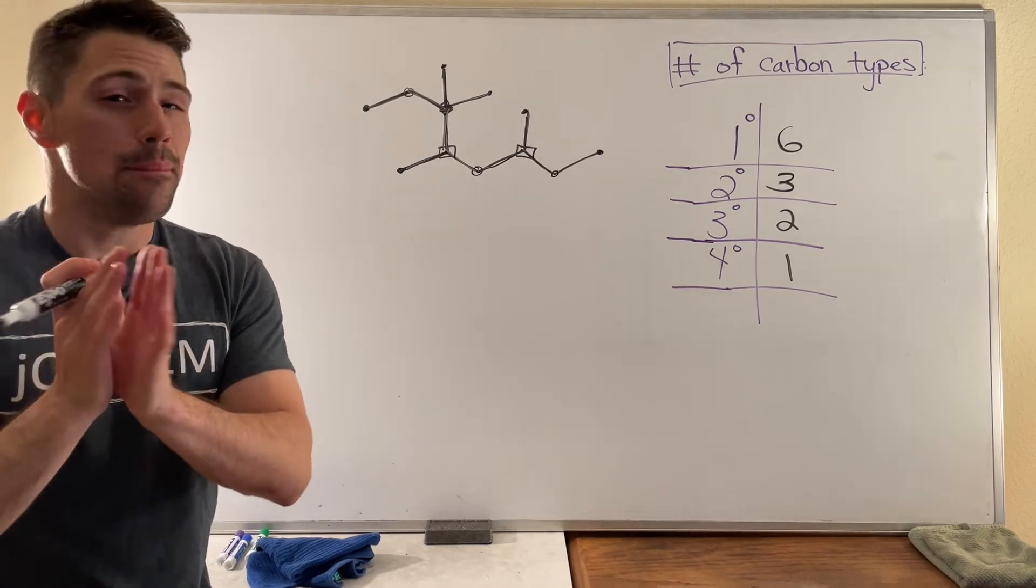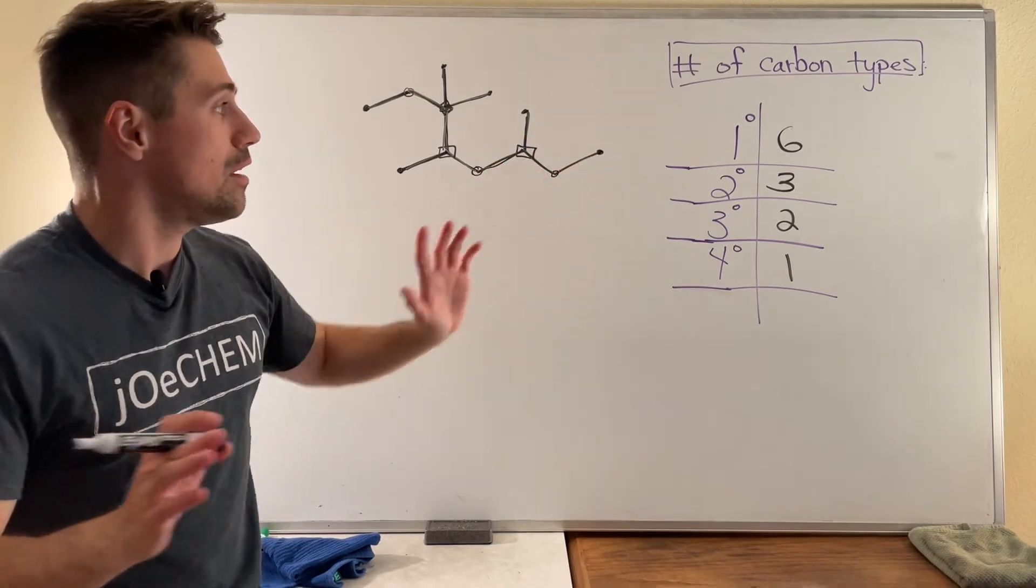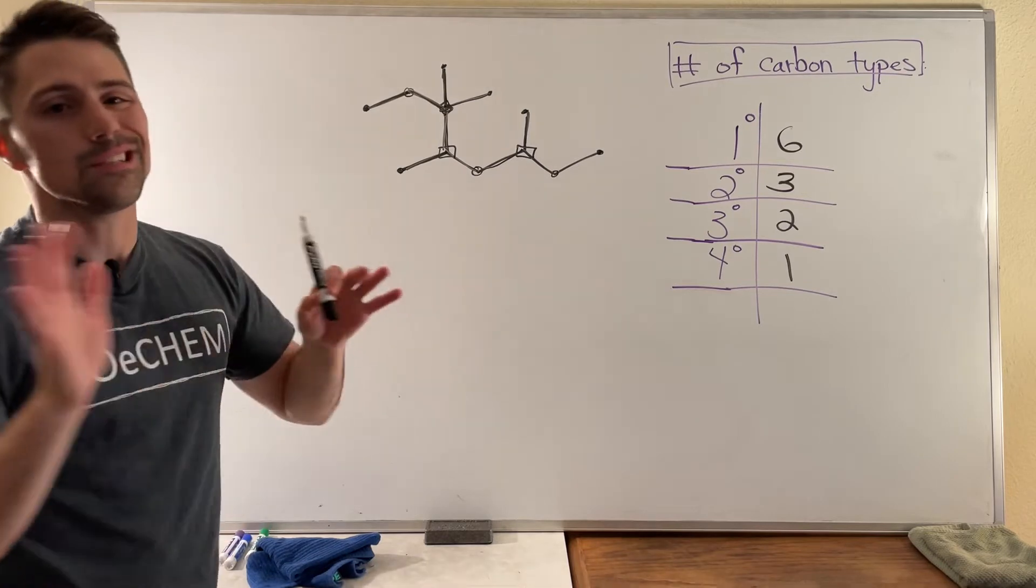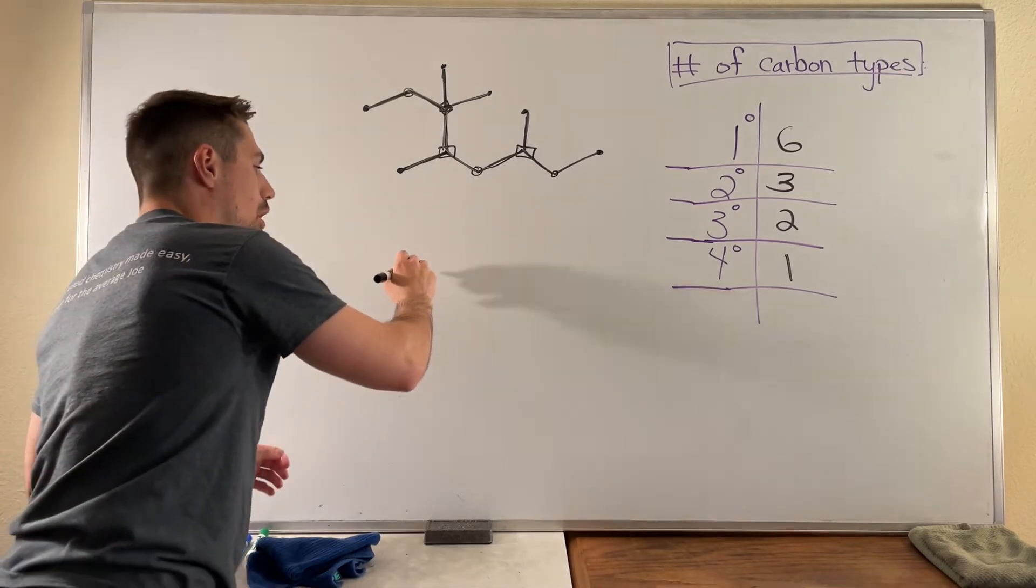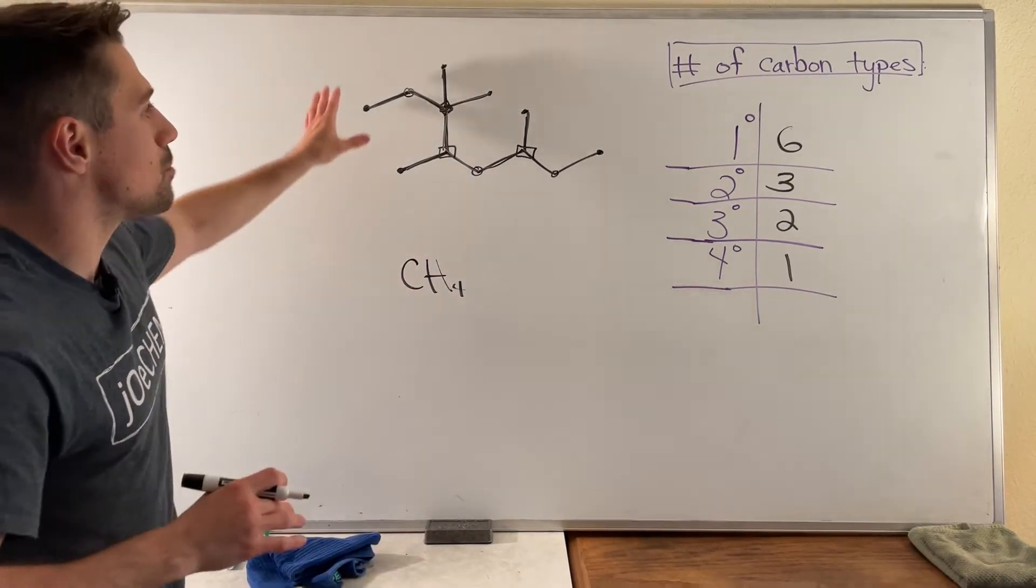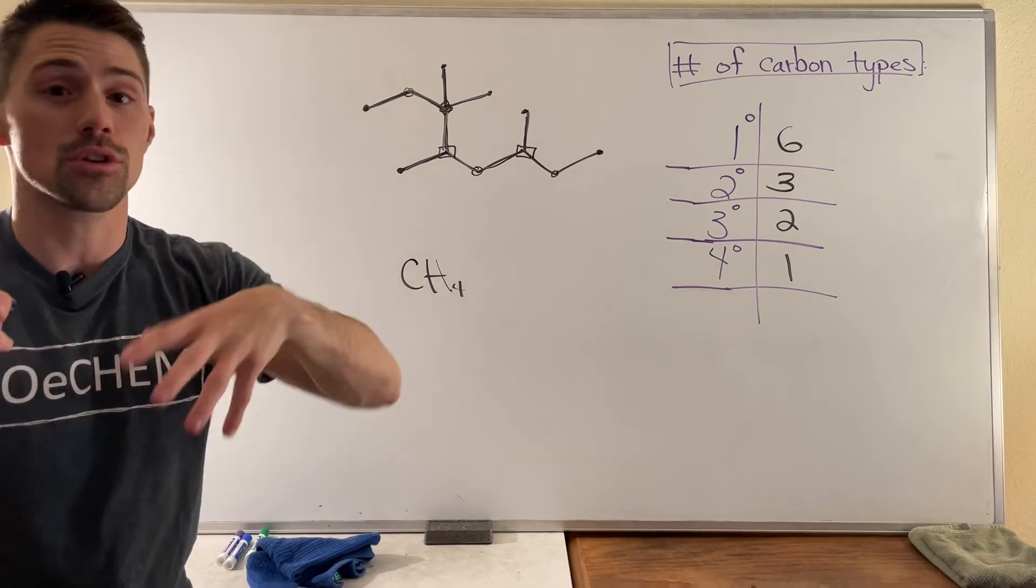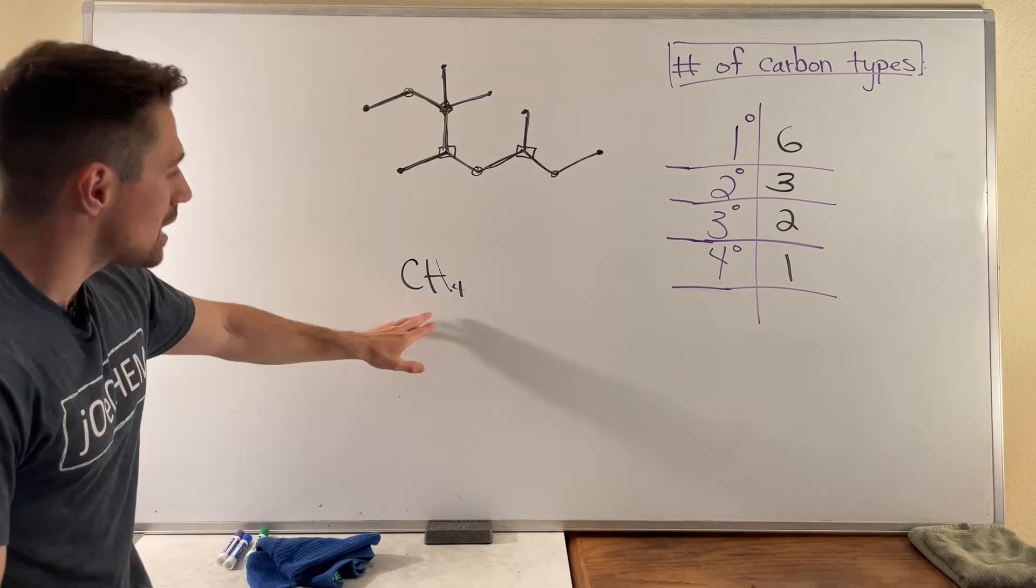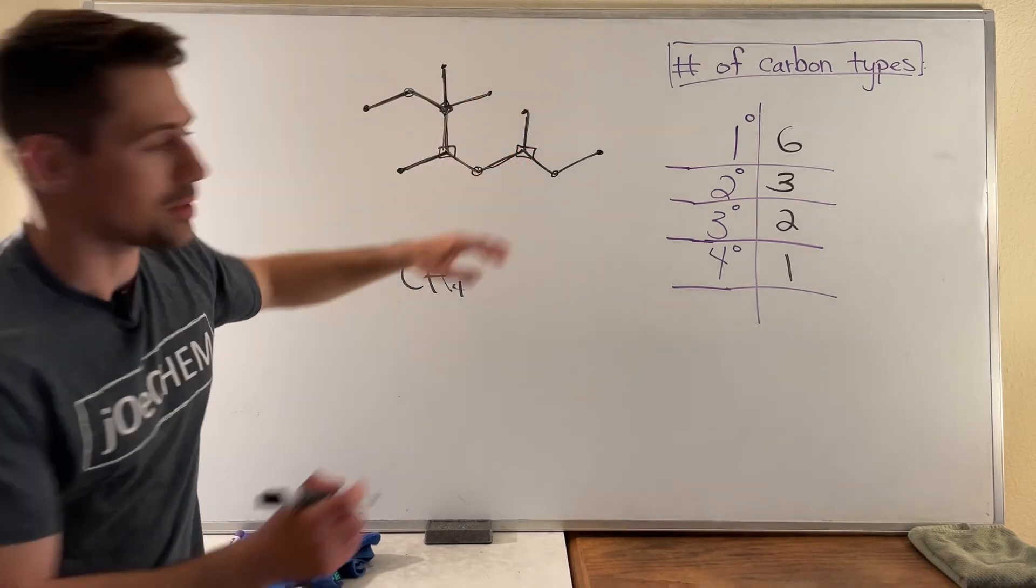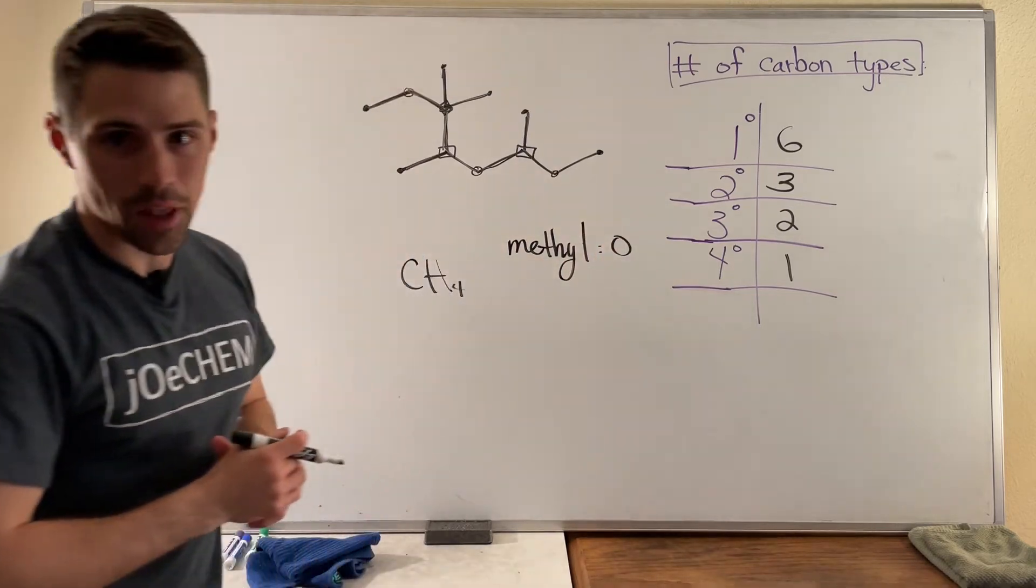Now maybe you thought to yourself at your computer, well Joe, why didn't you list out if there were any methyl carbons here? Think about this. I didn't do that because a methyl carbon by definition must not be attached to any other carbons. So if I'm drawing a carbon structure, an organic structure, a structure that contains carbon, unless it's one comprised of one carbon, there will be no methyl carbons. So we got zero.